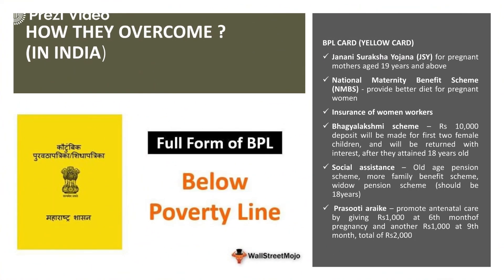The Indian government has provided many facilities and schemes to help people below the poverty line. BPL people are recognized by their yellow cards. Several government schemes include Janani Suraksha Yojana for pregnant mothers aged 19 years and above, National Maternity Benefit Schemes which provide a better diet for pregnant women so that the child born does not suffer from malnutrition, insurance of women workers, Bhagya Lakshmi scheme, social assistance for the elderly, and family benefit schemes like widow pension scheme and Prasuti Yojana which promotes antenatal care — benefiting pregnant women, poor people, and the elderly.